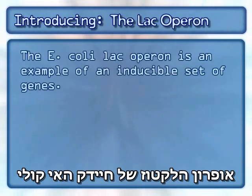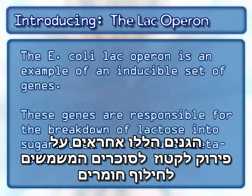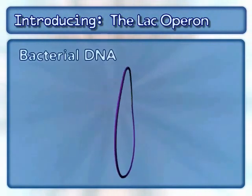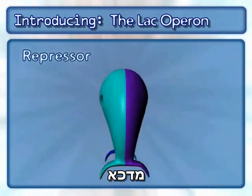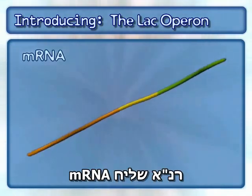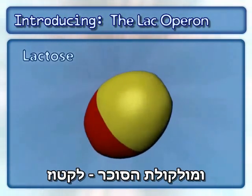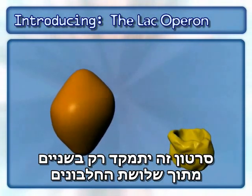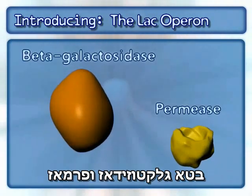The E. coli lac operon is an example of an inducible set of genes. These genes are responsible for the breakdown of lactose into sugars used for cellular metabolism. This inducible system also involves bacterial DNA, a repressor, mRNA, and the sugar molecule lactose. This animation will only focus on two of the three proteins encoded by the lac operon: beta-galactosidase and permease.